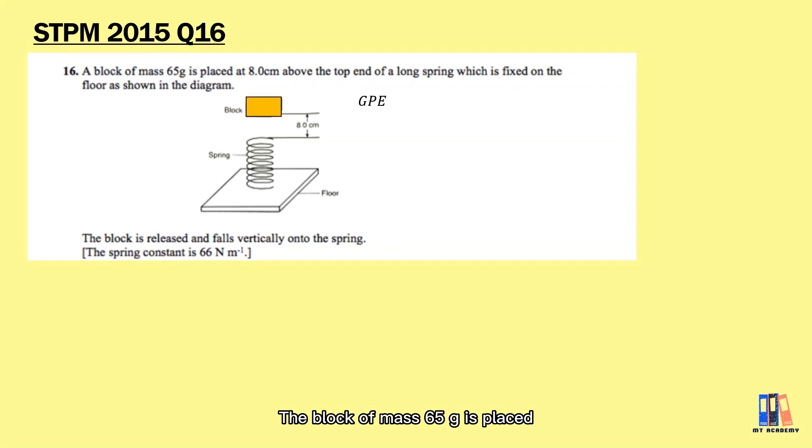The block of mass 65g is placed at 8 cm above the top end of a spring. Based on conservation of energy, the block on top shall have gravitational potential energy which will be converted when it is released. When the object is falling until the time just before the spring is compressed, the loss in gravitational potential energy is converted into the kinetic energy of object.